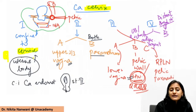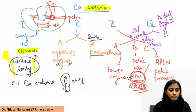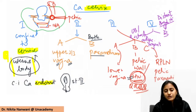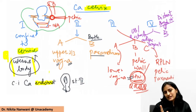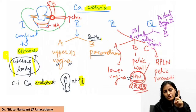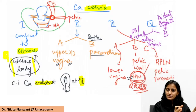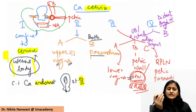Remember that involvement of the uterine body does not change the staging - it is stage one only. In contrast, in a case of ca endometrium, if the cervix is involved, then it is not stage one - it is stage two. So: ca cervix with uterine body involved is still stage one, but ca endometrium with cervical stroma involved (not just the endocervical glands) is stage two.